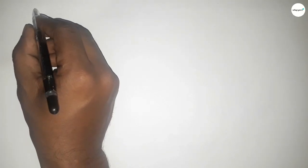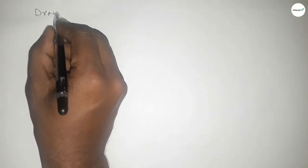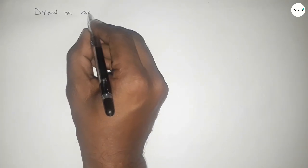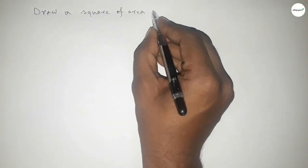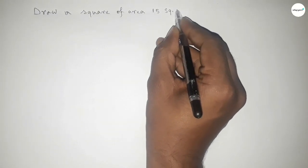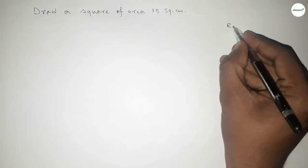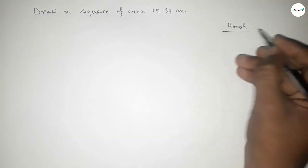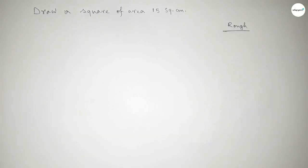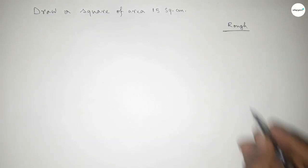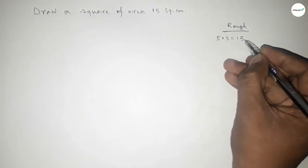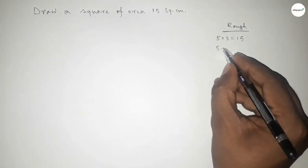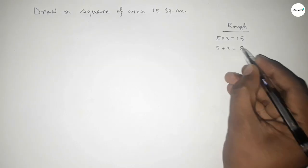Hi everyone, welcome to the size share class. Today in this video we have to draw a square of area 15 square centimeters. So let's start. In the rough space, we can write 15 as 5 into 3 equal to 15, then we can write 5 plus 3 equal to 8.